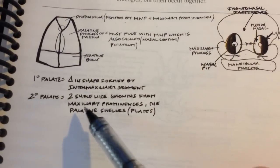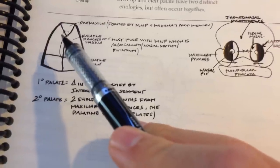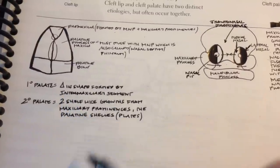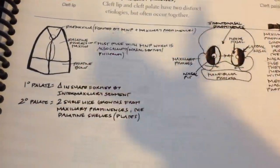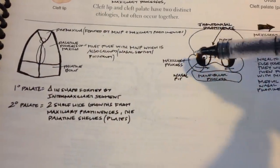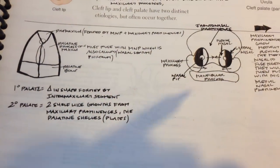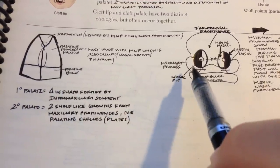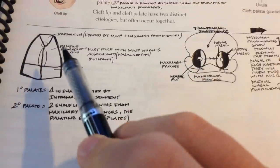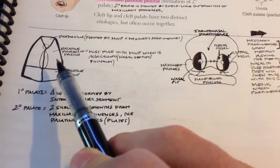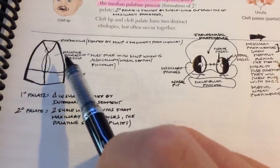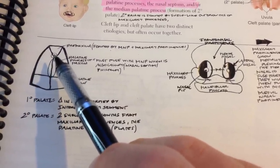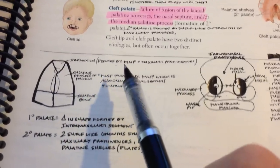The secondary palate is essentially just behind the primary palate and is formed by two shelf-like outgrowths from the maxillary prominences — now called the palatine shelves or plates. There are two views here: a straight-on facial view and an inferior view of the palate showing anterior and posterior. The palatine shelf grows out from the maxillary process, and it should fuse in the midline and also fuse with the triangular primary palate formed by the medial nasal prominences.